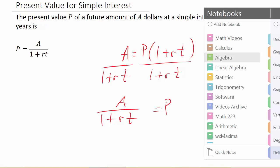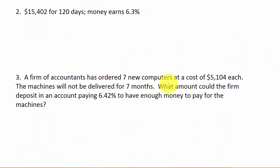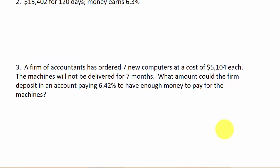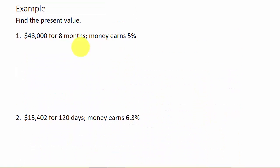Alright, so let's go ahead and take a look at the example. We've got three examples. One of them is a pretty good word problem we're going to work. So you may want to hang around for that one. So, let's look at this. It says find the present value, $48,000 for eight months, money earns 5%.